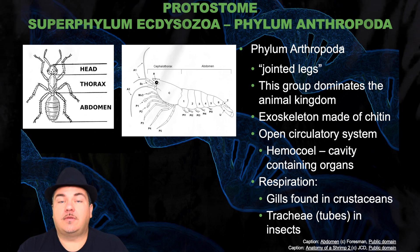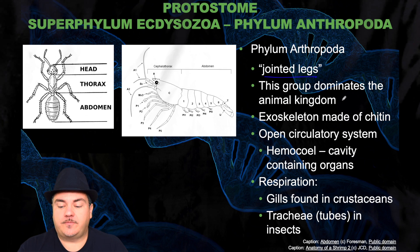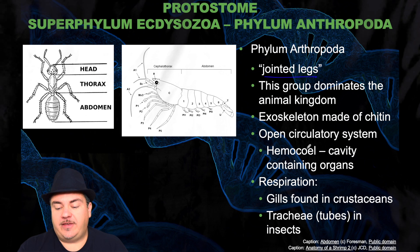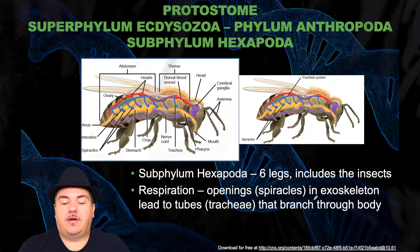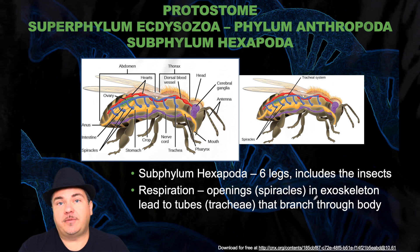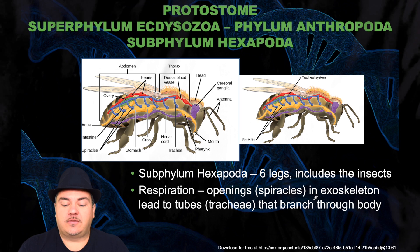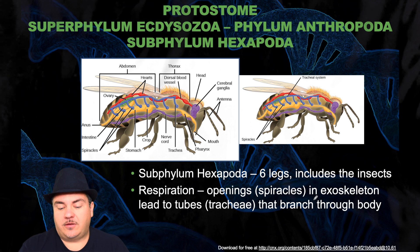Next phylum is Arthropoda, which technically means 'jointed legs.' This group dominates the animal kingdom. The exoskeleton is made of chitin; they have an open circulatory system and a hemocoel — a cavity containing organs. Respiration can be through gills found in crustaceans or tracheal tubes found in insects. The subphylum Hexapoda — the 'hex' prefix meaning six — have six legs and includes the insects. Their respiration is through openings called spiracles in the exoskeleton, leading to tracheal tubes that branch through the body.